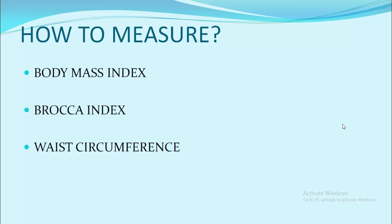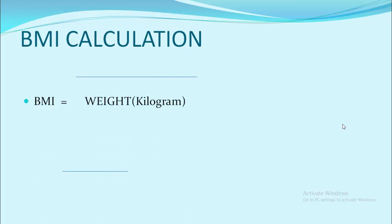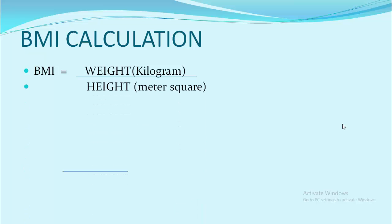These terms might look confusing, right? Let us make it clear one by one. What is body mass index and how to calculate it? BMI calculation is very simple. It means weight in kilogram divided by height in meter square. Consider a person who is having a weight of 60 kilogram and height of 160 centimeter. How can we calculate the BMI? Apply the formula. BMI equals weight by height in meter square.